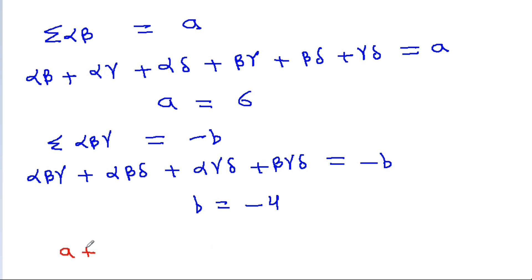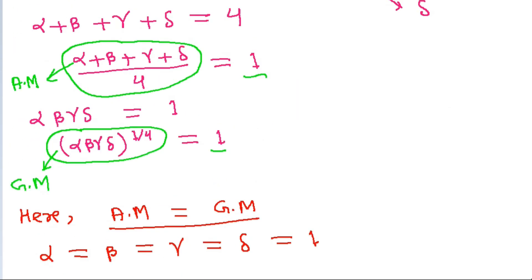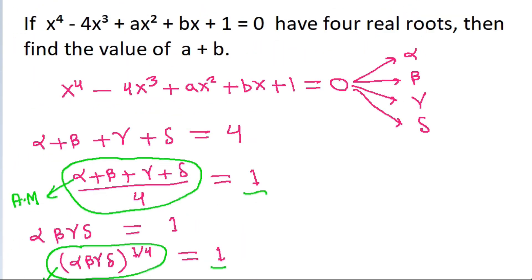Therefore, a + b = 6 + (-4) = 2. So a + b is 2.